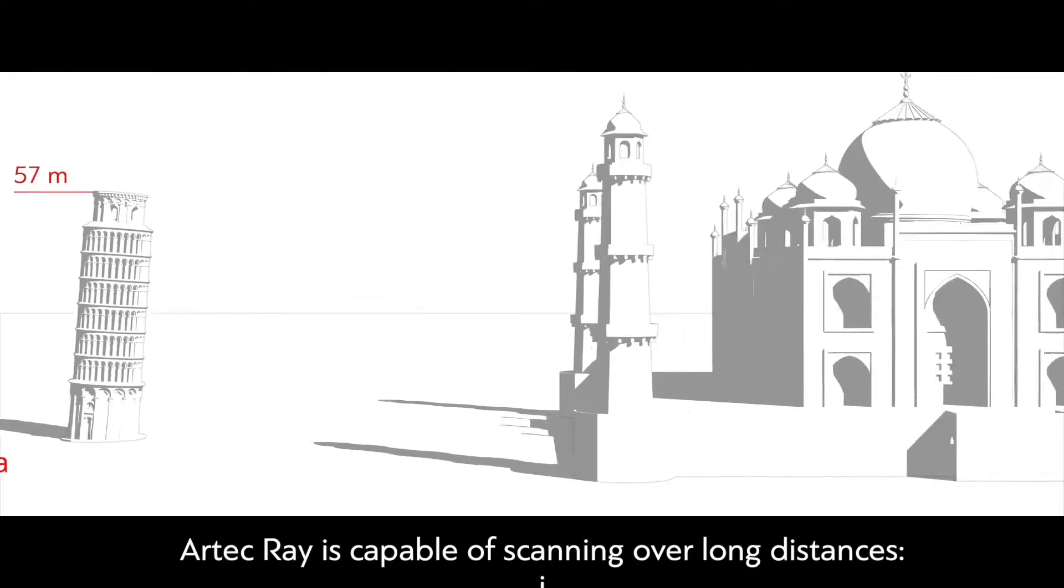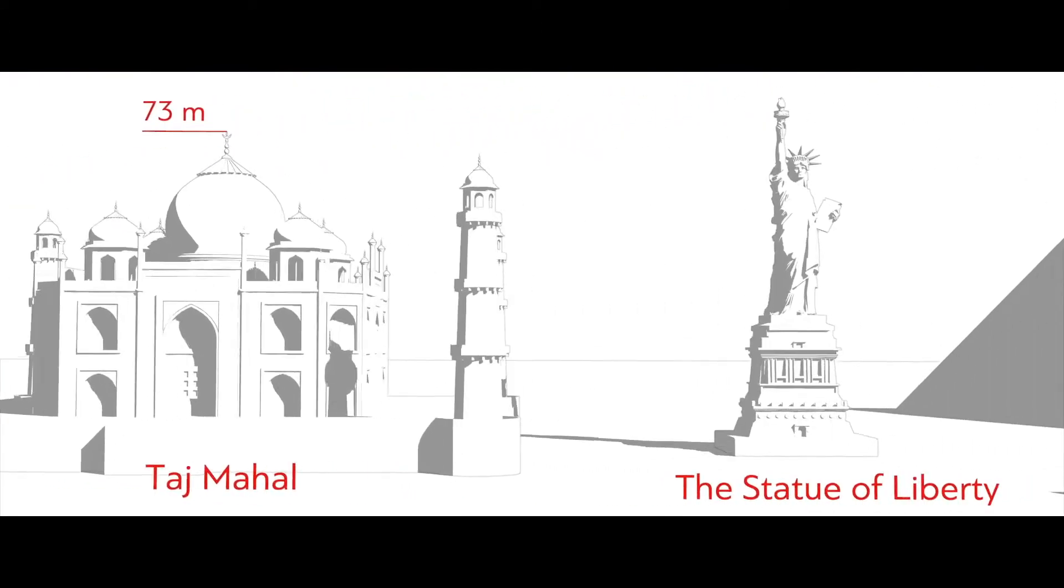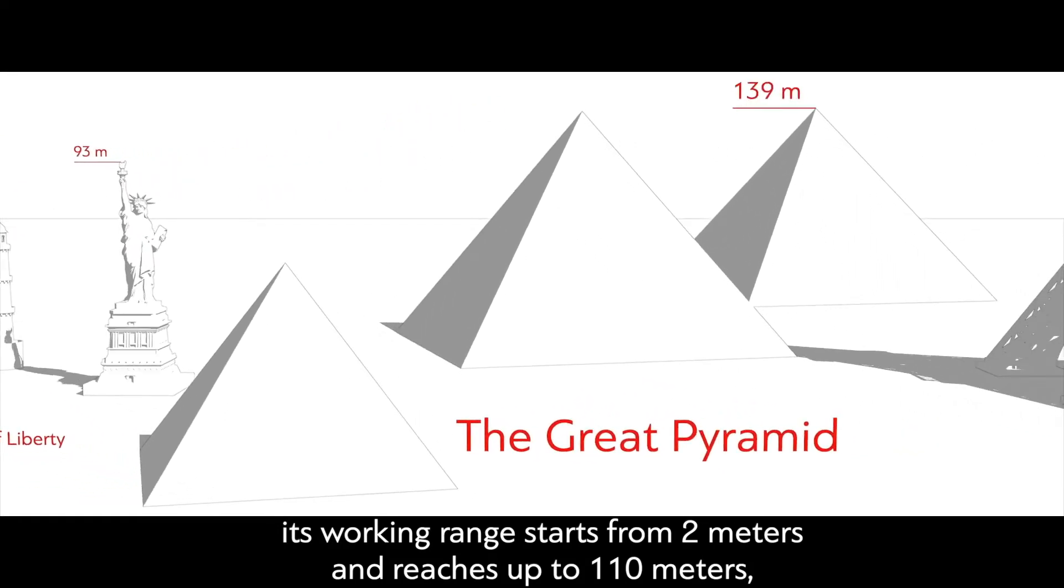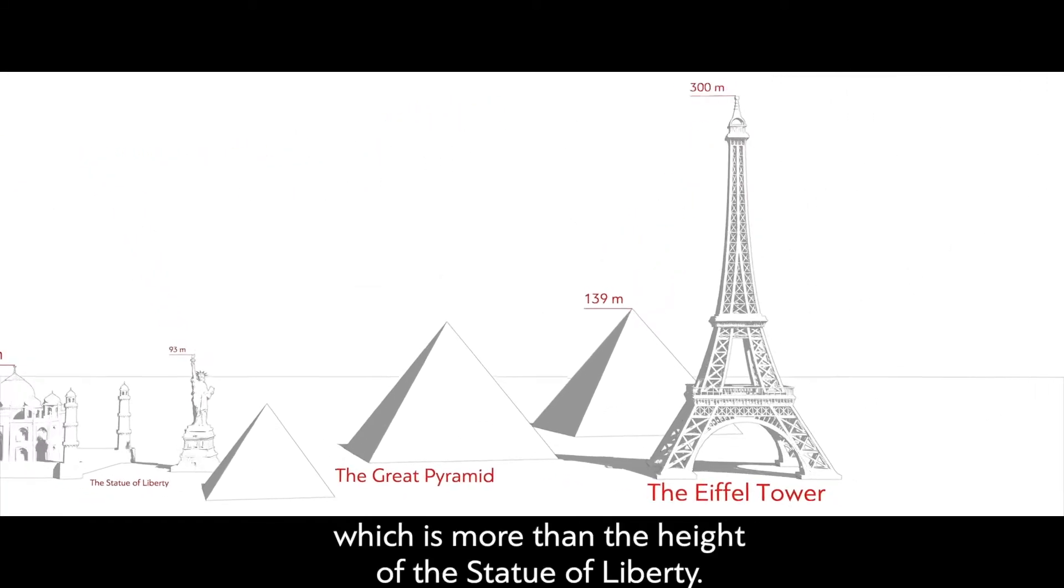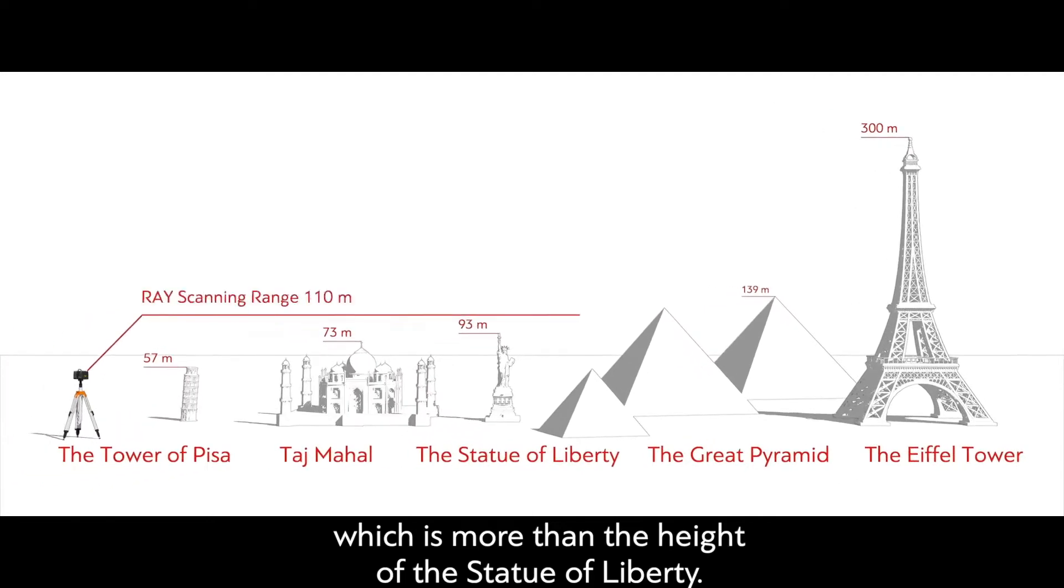Artecray is capable of scanning over long distances. Its working range starts from 2 meters and reaches up to 110 meters, which is more than the height of the Statue of Liberty.